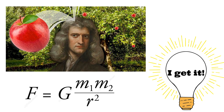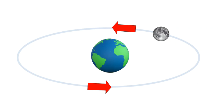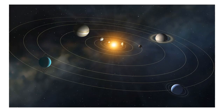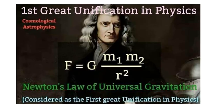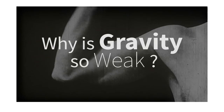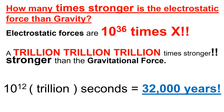Newton's key insight was that the same force making an apple fall was the same force keeping the Moon orbiting Earth and the planets orbiting the Sun — the first great unification in physics: the universal law of gravitation. However, gravity is actually a very weak force — it's a trillion trillion trillion times weaker than the electrostatic force.